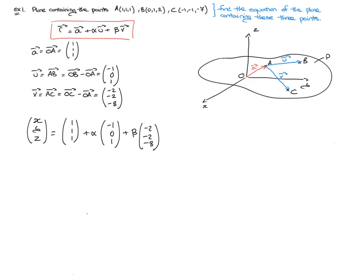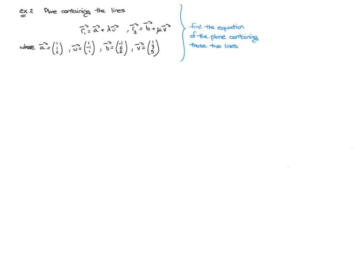Now let's move along and look at another exercise. We're asked to find the equation of a plane which contains two lines. The first is given by the vector equation R1 equals A plus lambda U, and the second is given by R2 equals B plus mu times vector V. We're told that position vector A has coordinates one, one, two, and vector U has coordinates one, negative one, one.